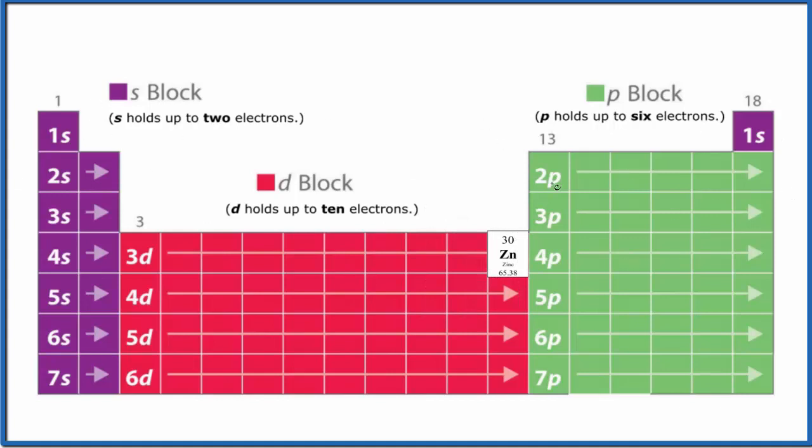Zinc is right here on the periodic table. To write the configuration we'll follow the pattern here until we get to zinc. We start with the first energy level: 1s1, 1s2, that's full. Then we go to the second energy level: 2s1, 2s2.